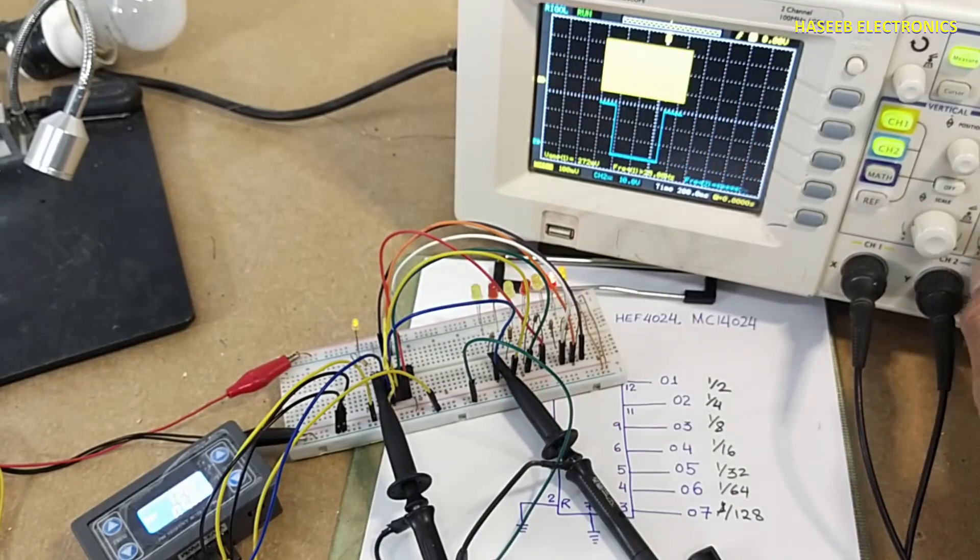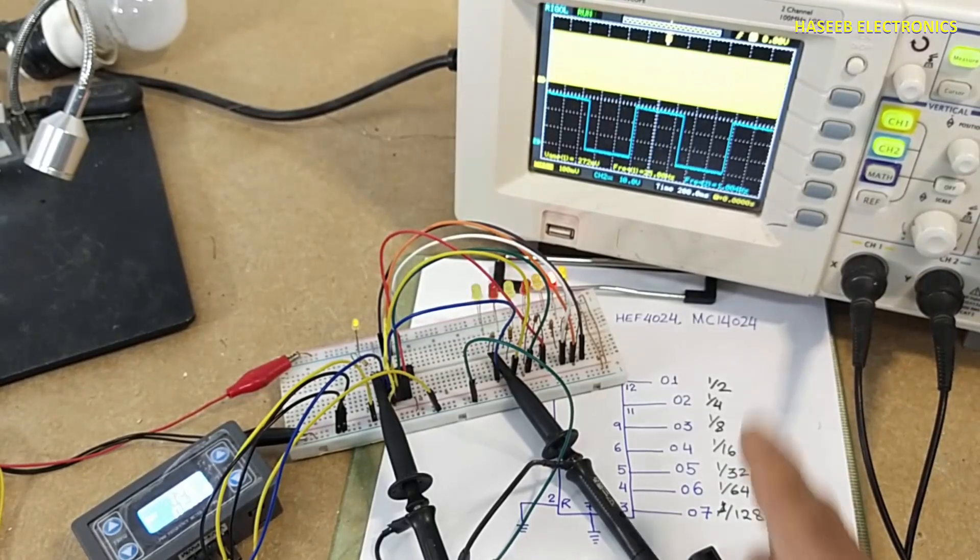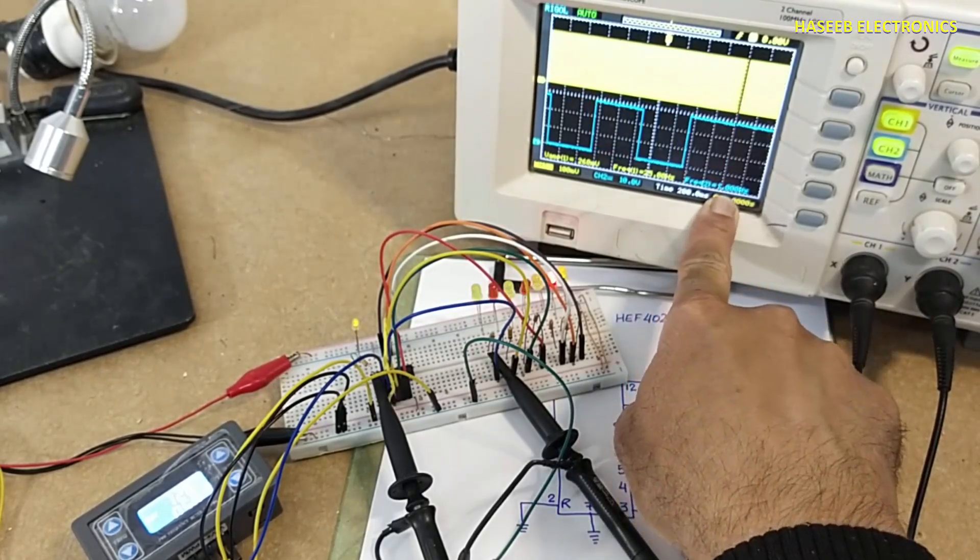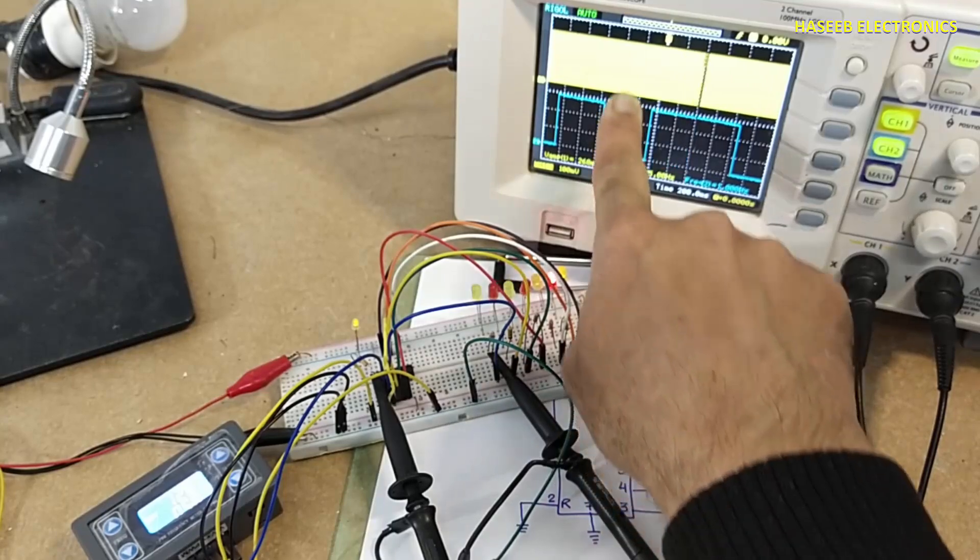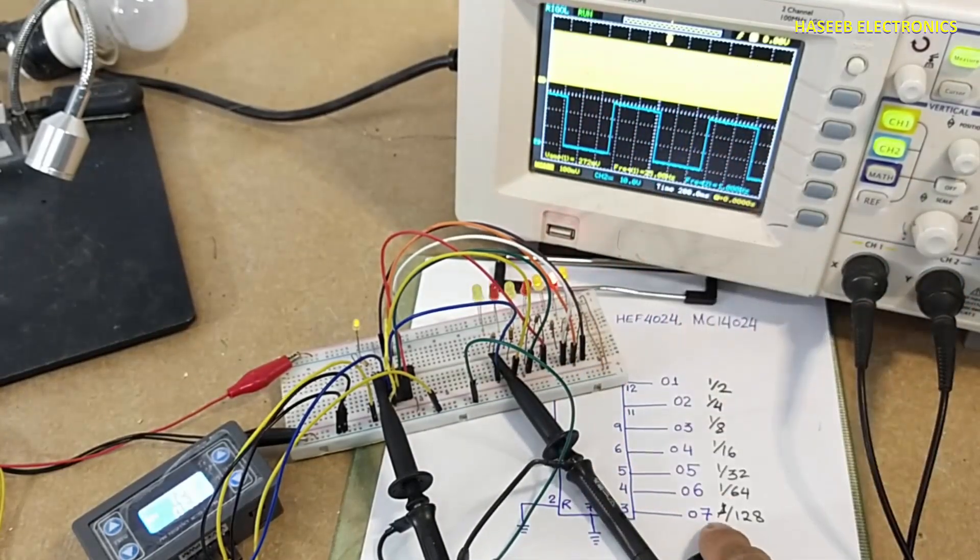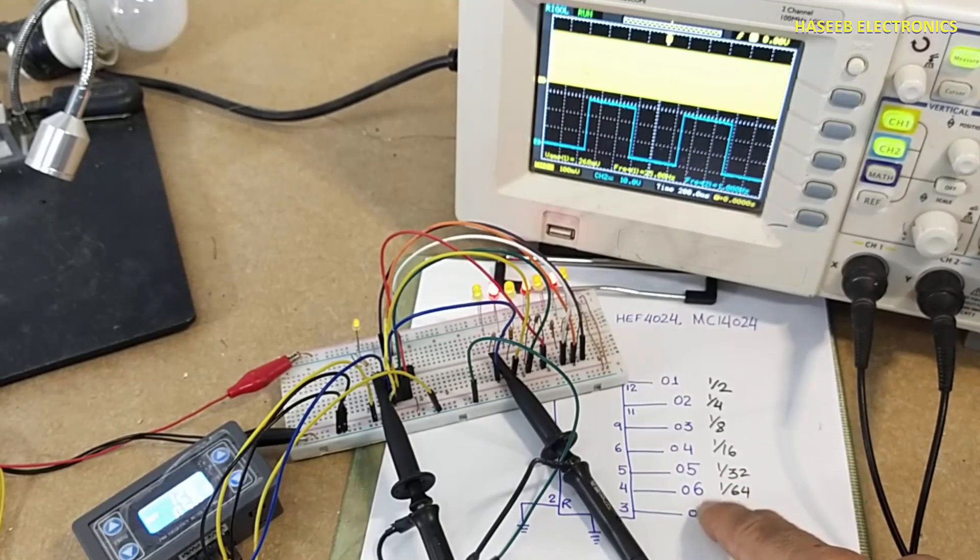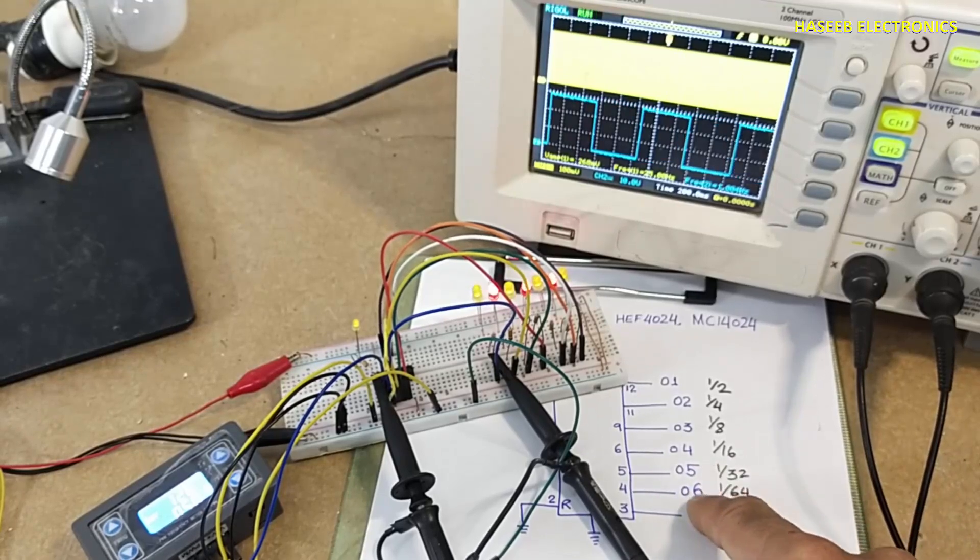7th output - exactly 1 hertz. We provided 128 hertz here and we are receiving 1 hertz at 7th stage. Each stage is providing half frequency than its upper stage.